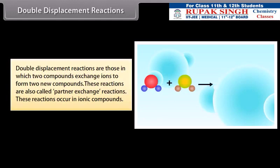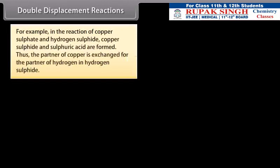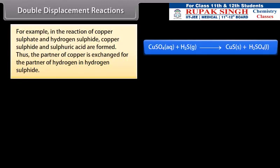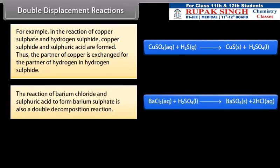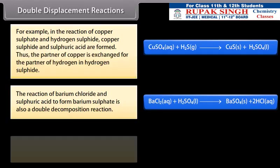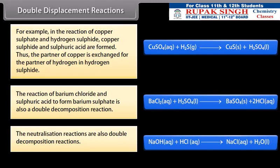Double displacement reactions: Double displacement reactions are those in which two compounds exchange ions to form two new compounds. These reactions are also called partner exchange reactions. These reactions occur in ionic compounds. For example, in the reaction of copper sulfate and hydrogen sulfide, copper sulfide and sulfuric acid are formed. Thus, the partner of copper is exchanged for the partner of hydrogen in hydrogen sulfide. The reaction of barium chloride and sulfuric acid to form barium sulfate is also a double decomposition reaction. The neutralization reactions are also double decomposition reactions.